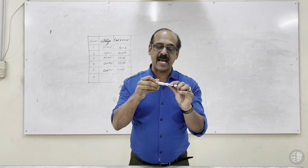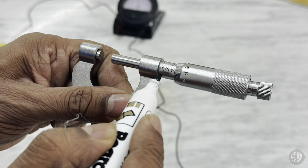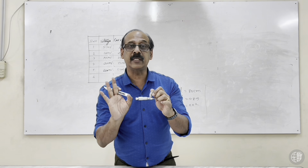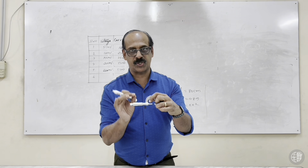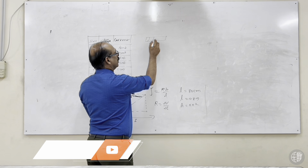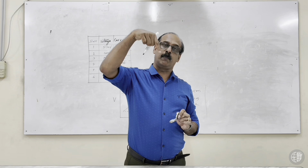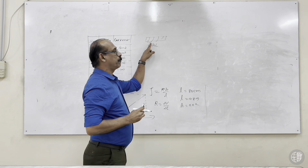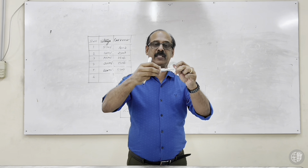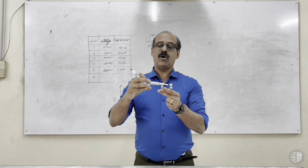The screw gauge has a pitch scale with millimeter readings and a head scale with around 50 divisions. Different types of screw gauges may have 100 divisions. First we calculate the pitch — the distance between two threads of the screw. When the screw rotates one complete turn, the distance moved equals one pitch. This ratchet portion controls the rotation; the line on the pitch scale is the baseline.